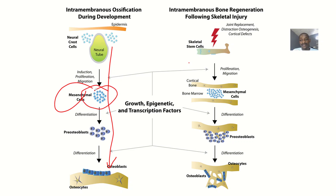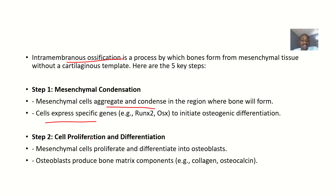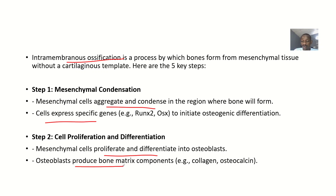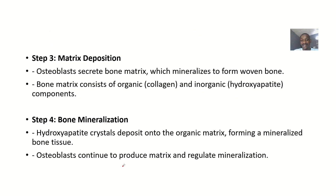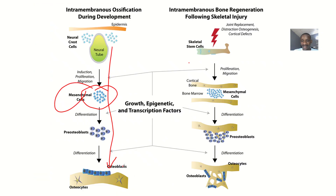Step two is cell proliferation and differentiation. The accumulated mesenchymal cells begin to grow and specialize, becoming osteoblasts — the primitive bone cells. These osteoblasts produce bone matrix components such as collagen and osteocalcin, which increase the strength and maturity of the developing bone.